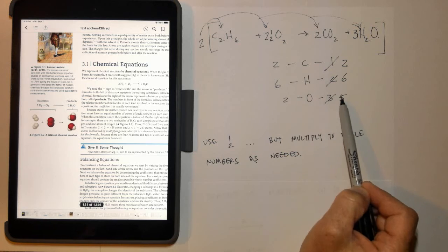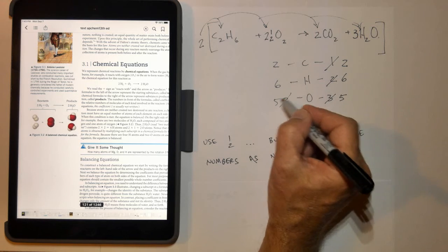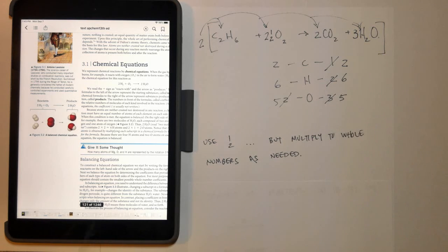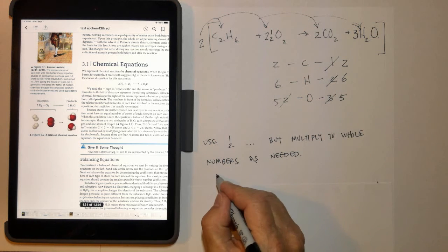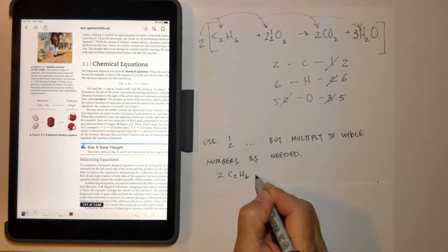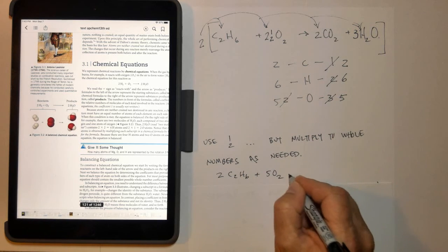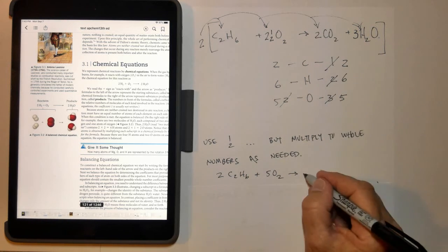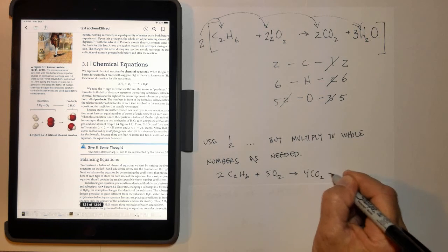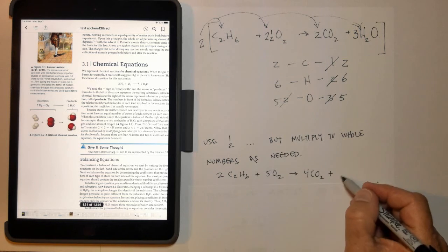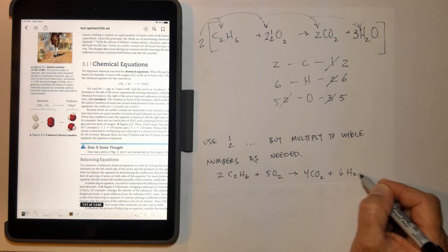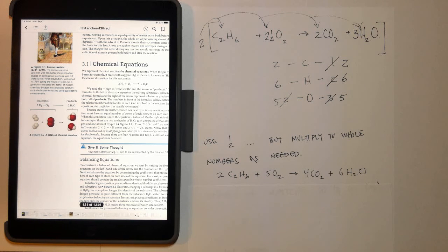two, two, six, six, well, this would be five then, five and five. Now multiply everything by two because you'll get rid of a half. So I'd end up with 2 C2H6 plus 5 O2 goes to 4 CO2 and then 6 H2O over here on the right-hand side. And then I'd have a balanced chemical equation with whole number coefficients.